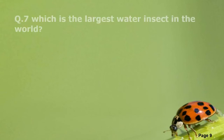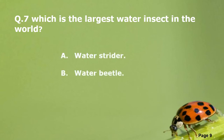Question Number 7. Which is the largest water insect in the world? A: Water Strider. B: Water Beetle. C: Goliath Beetle. D: Giant Water Bug.